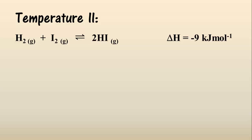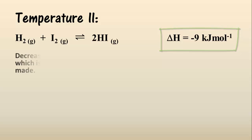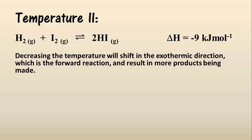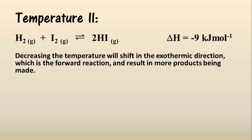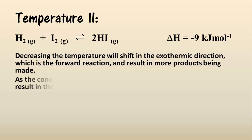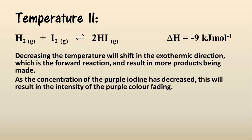So looking at the hydrogen iodide reaction again, the forward direction of this reaction is exothermic, given by the negative enthalpy change. So decreasing the temperature of the equilibrium reaction will shift the reaction in the exothermic direction, which in this case is the forward reaction. Therefore it will result in an overall increase in the concentration of products. So in this case, as the concentration of the purple iodine — the reactant — is being reduced, cooling the reaction vessel will result in the intensity of the purple colour fading.